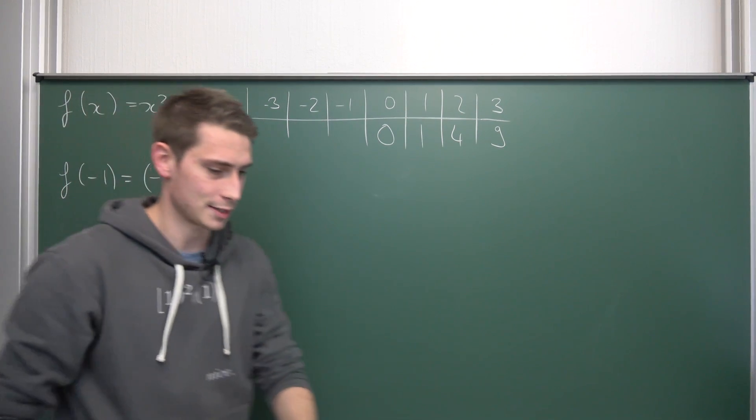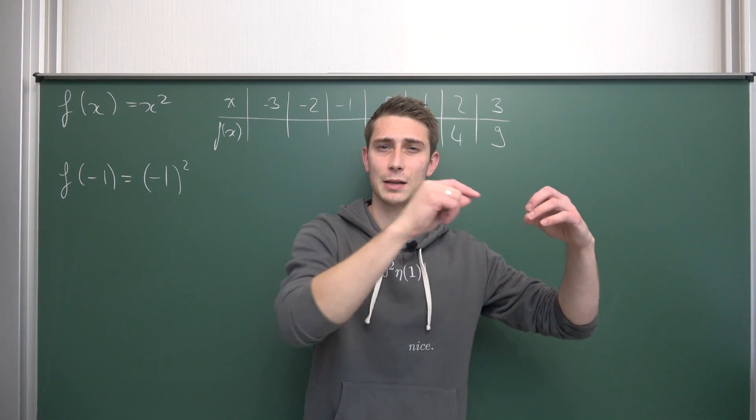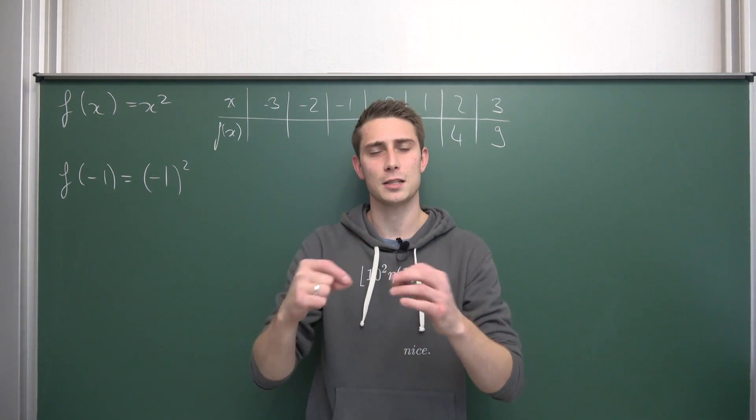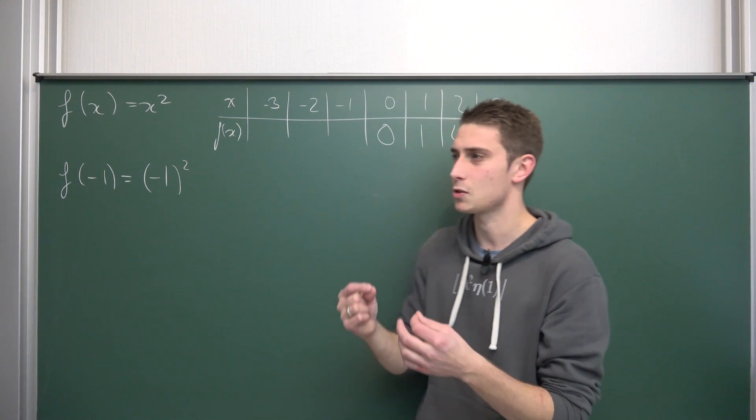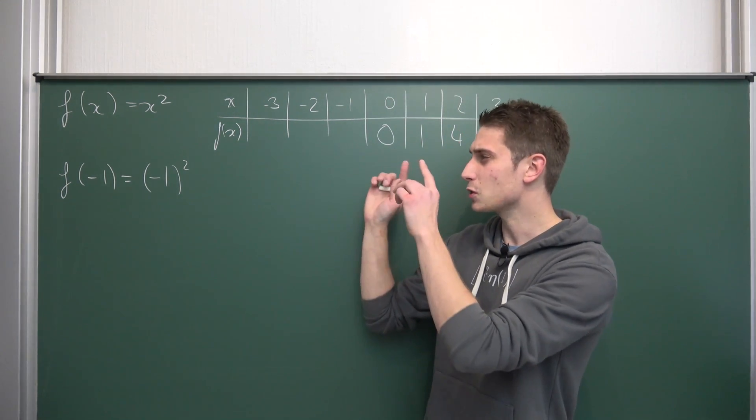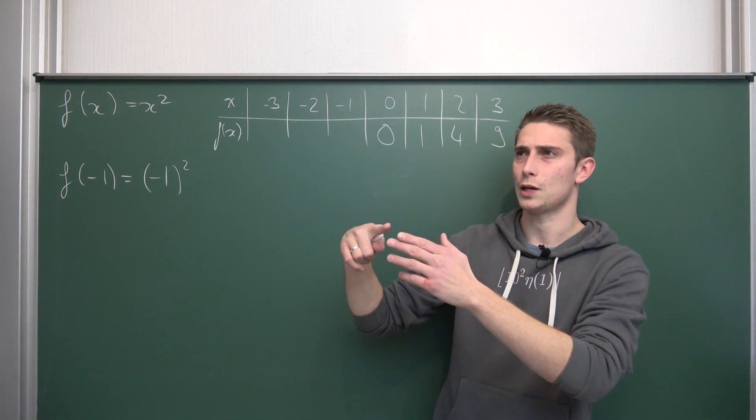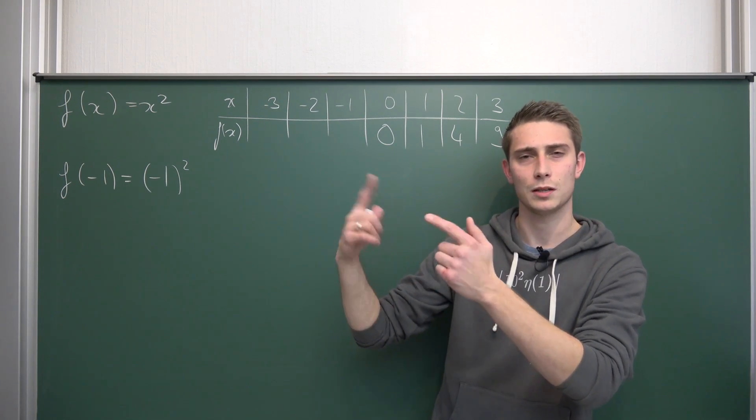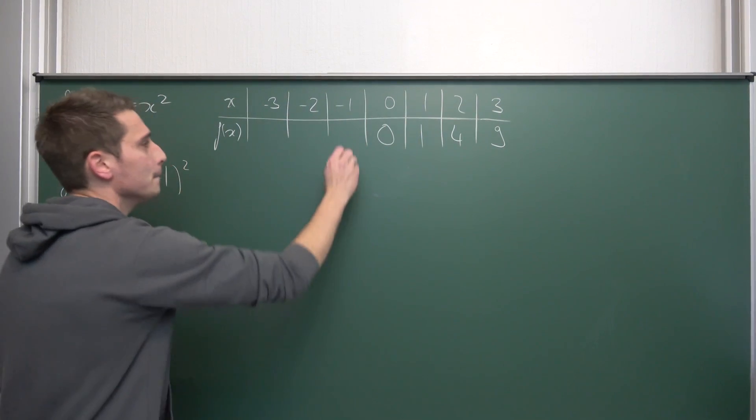Now, we got negative one squared, so this by definition is negative one times negative one. In the sets of numbers playlists, we have learned that negative times negative is going to become positive. So, we are going to get positive one squared, one squared, it's just one yet again. Curious.